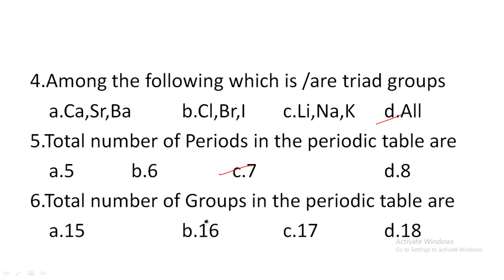Next one: the total number of groups in the periodic table are — option A: 15, option B: 16, option C: 17, option D: 18. The total number of groups in the periodic table are 18. Hence, option D is the correct answer.